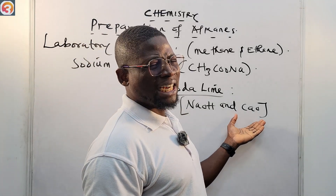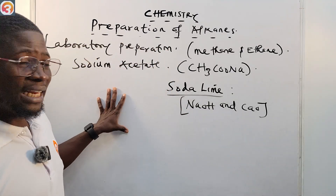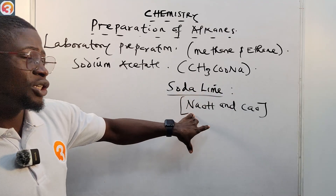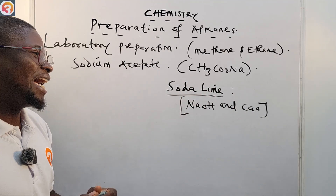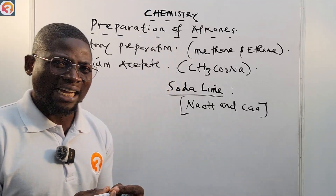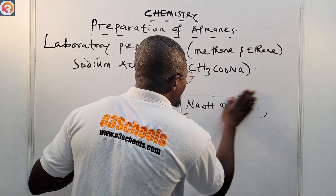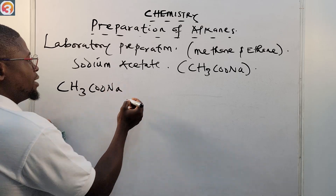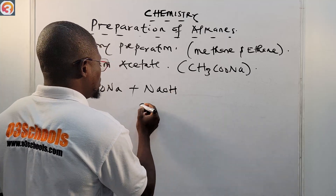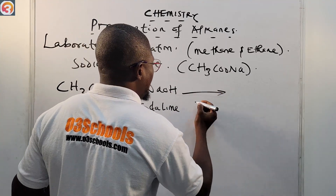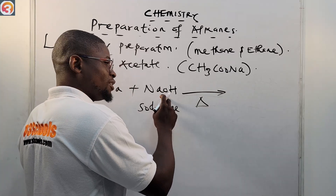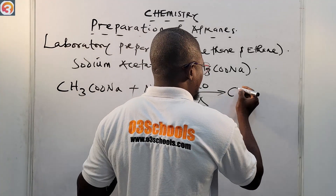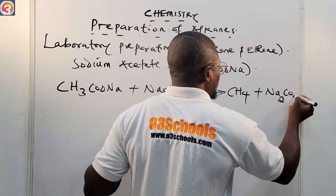So we prepare methane by heating sodium acetate with soda lime — that combination of sodium hydroxide and calcium hydroxide. The products are methane and sodium carbonate. The reaction is: CH₃COONa + NaOH (soda lime, heat) → CH₄ + Na₂CO₃.